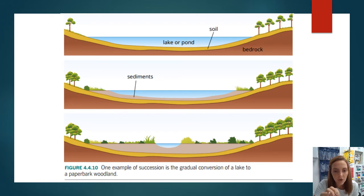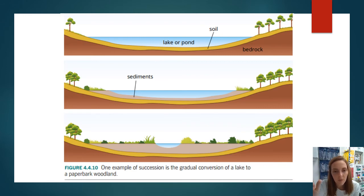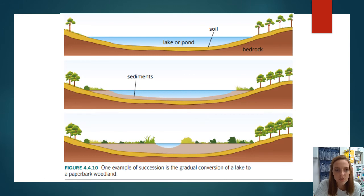This shows the succession of a lake turning into a paperbark woodland. Starting with a lake or pond and some soil, sediments build up over time — as with weathering and erosion — and that sediment often contains nutrients. Over time pioneer species start to develop, and eventually this turns into a more complex woodland ecosystem.